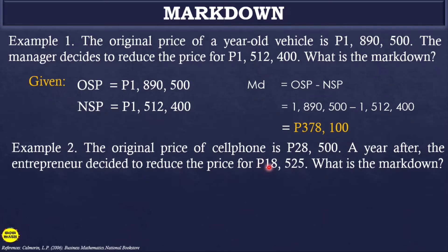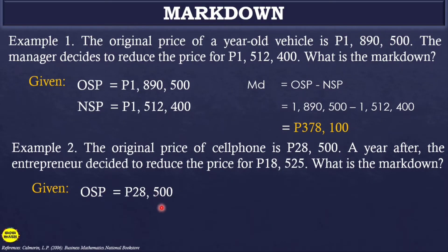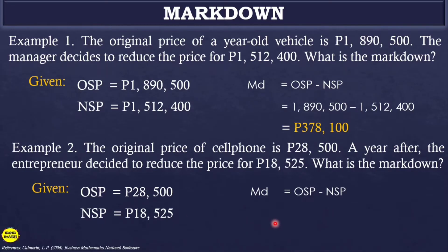Example 2: The original price of a cell phone is 28,500. A year after, the entrepreneur decided to reduce the price to 18,525. This often happens with cell phone brands — every time a new model is released, the old model is sold at a lower price because customers will buy the new model. Given: Original Selling Price = 28,500; New Selling Price = 18,525. Markdown = 28,500 − 18,525 = 9,975 pesos.